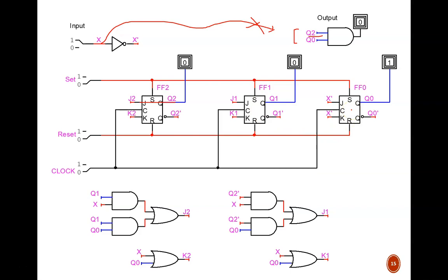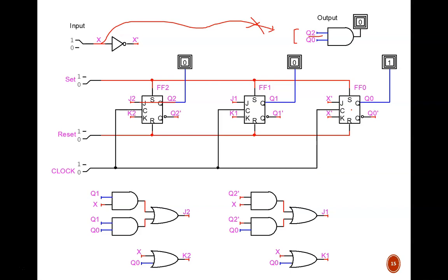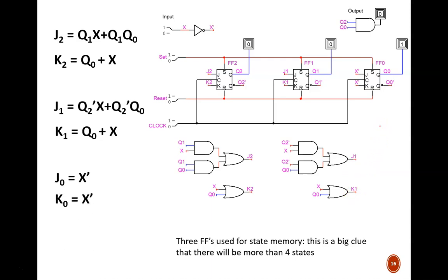Begin your analysis of this circuit by identifying the Boolean equations for all flip-flop instructions. Pause the video while you do so. The equations for j2 and k2 are shown here, which are taken from these leftmost logic gates. The equations for j1 and k1 are shown here, which are taken from these rightmost logic gates. And the equations for j0 and k0 are so simple they don't need separate combinational circuits.